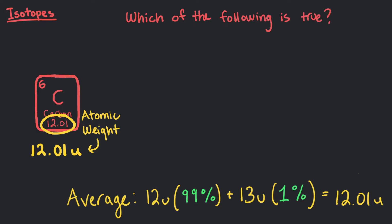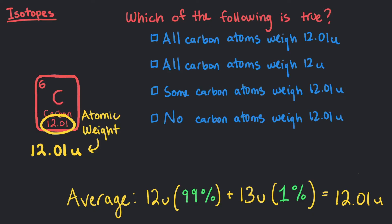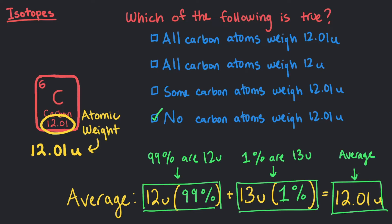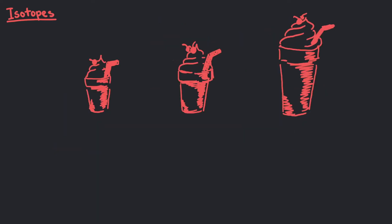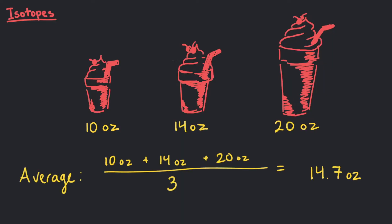Which of the following is true? Even though the average weight of a carbon atom is 12.01u, no actual carbon atom has that weight. Think of it this way, a restaurant has 3 drink sizes, 10 ounces, 14 ounces, and 20 ounces. That makes the average size 14.7 ounces. So no drink served at that restaurant has that size, but it's the average.